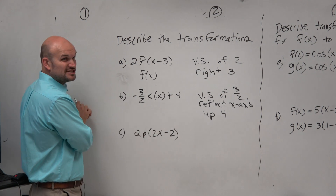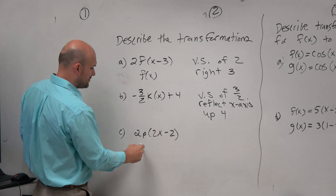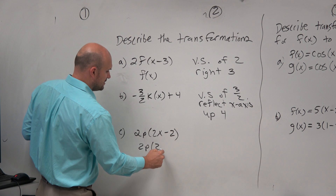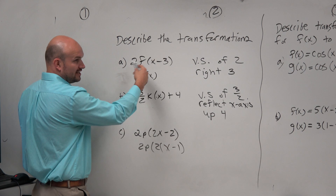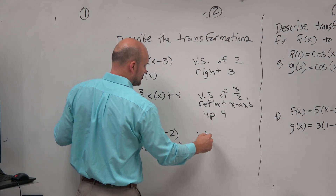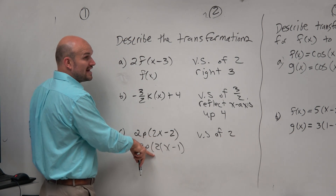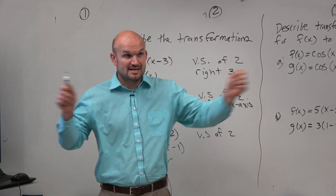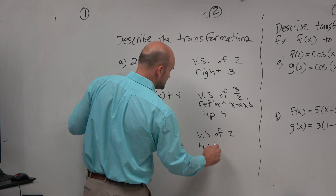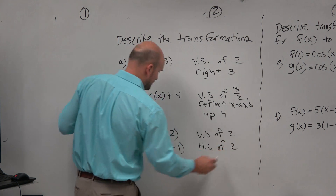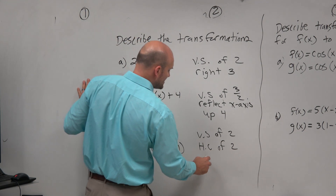Last but not least, there are a lot of 2's here, so let's simplify this out. We know we have a 2 in front — we're going to factor this. Factor out that 2, so I'm left with an x minus 1. Now I see there's a 2 out front — that's my vertical stretch again, so I'll say a vertical stretch by a factor of 2. I don't want to say horizontal stretch, because a horizontal stretch and a vertical stretch are not the same thing. This is a horizontal compression of 2. And we definitely don't want to write right 2, because when we factor out the 2, we see it's actually only right 1.